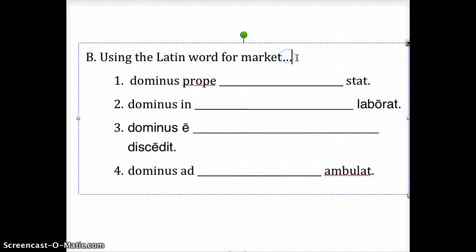Okay, in this section, try using the Latin word for market, which is the neuter second declension noun forum. And again, you need to change the endings of the noun based on the preposition that's used. Take a minute here to stop the video if you need to.